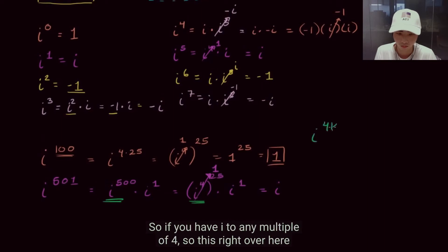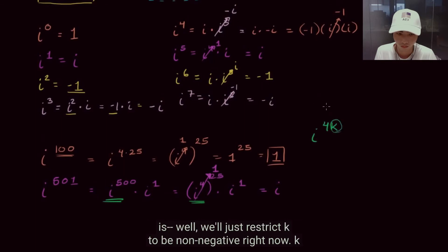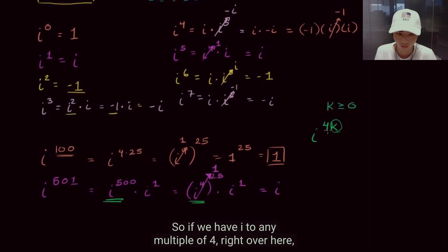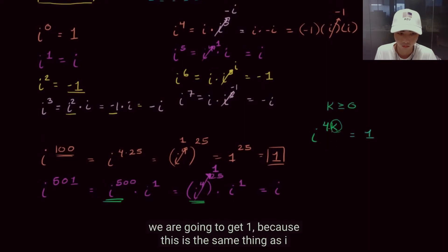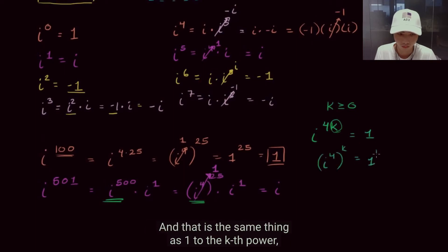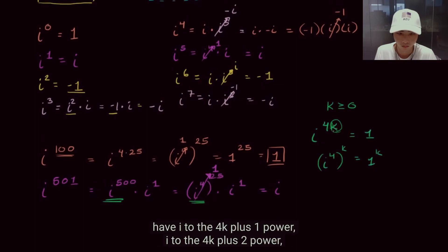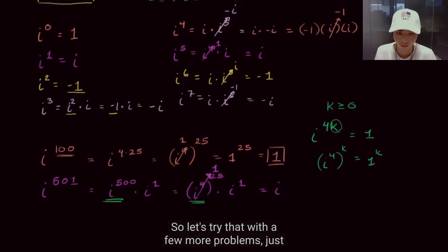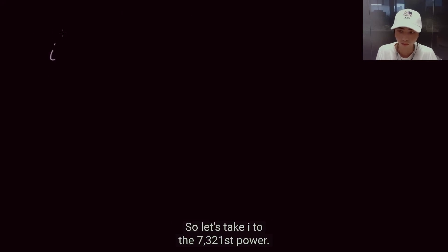Generally, i to any multiple of 4 equals 1, because that's the same as i to the fourth to the kth power, which is 1 to the kth power. If we have i to the 4k plus 1, or 4k plus 2, we can use this same technique. Let's try i to the 7321st power. 7320 is divisible by 4, and then we have 1 left over. So this is i to the 7320 times i to the first — the 7320 part simplifies to 1, leaving us with just i.